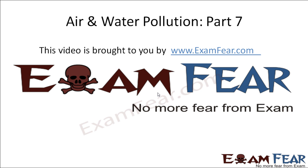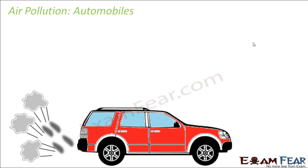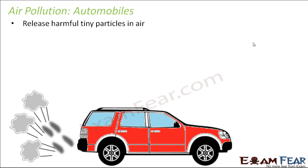Hello friends, this video on air and water pollution part 7 is brought to you by examfear.com. Now let us look at the next source, that is automobiles. In automobiles they release harmful tiny particles in the air. If you look at the vehicles which run on road, not all vehicles — because these days a lot of measures have been taken — but many vehicles release black gases, smoke and dust as they move on the road.